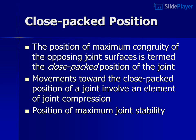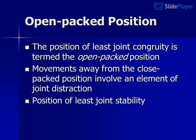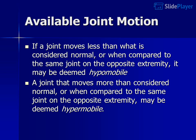Close-packed position: the position of maximum congruity of the opposing joint surfaces, representing maximum joint stability. Movements toward the close-packed position involve an element of joint compression. Open-packed position: the position of least joint congruity and least joint stability. Movements away from the close-packed position involve an element of joint distraction. Regarding available joint motion, if a joint moves less than what is considered normal, or when compared to the same joint on the opposite extremity, it may be deemed hypomobile. A joint that moves more than considered normal may be deemed hypermobile.